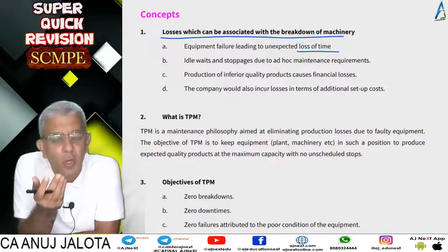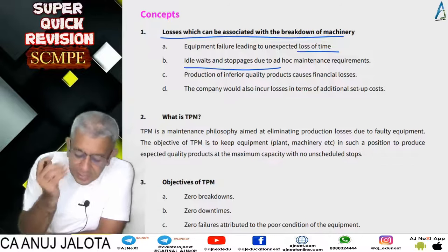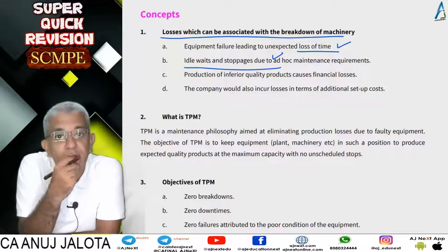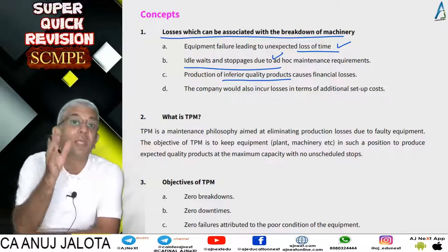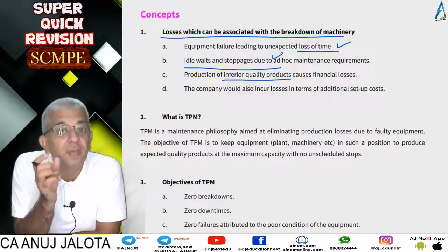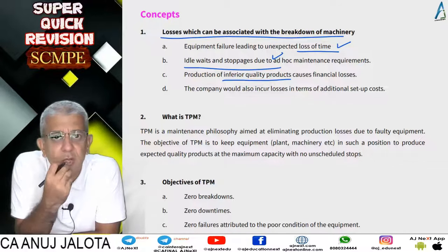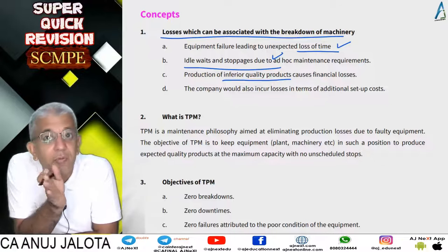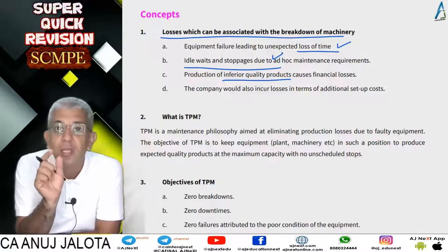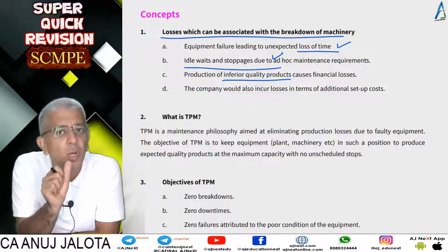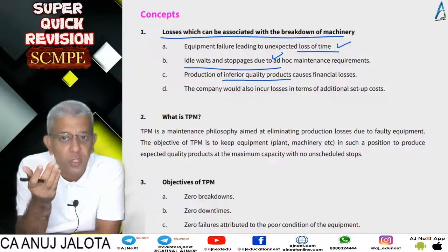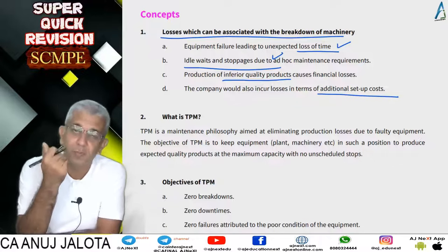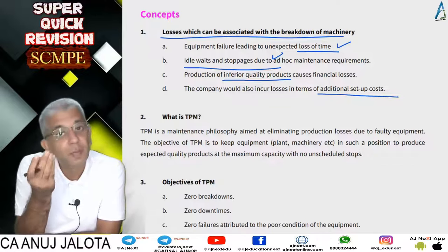The first loss is loss of time which could have been used for production — workers will be waiting and you might still have to pay them. So first, production is lost; second, you still have to pay workers. Third, if machinery is not maintained properly, product quality will start suffering. For example, an AC about to go bad — for one or two hours before failing, the air it produces won't be very cold. Also, if your machines require setup, whenever the machine breaks down you'll have to set up and restart, incurring extra cost.